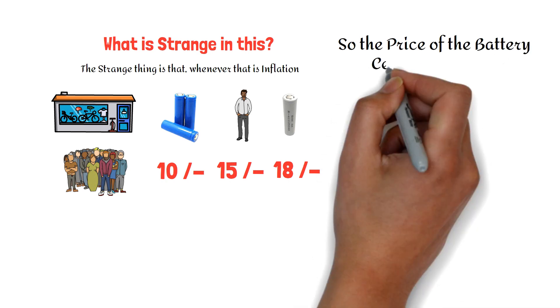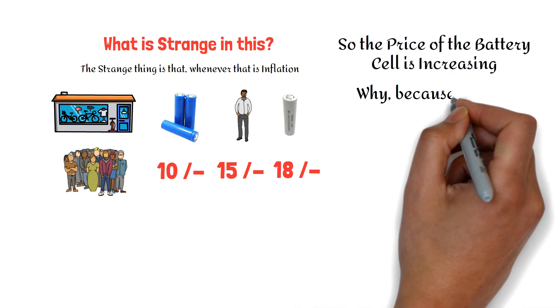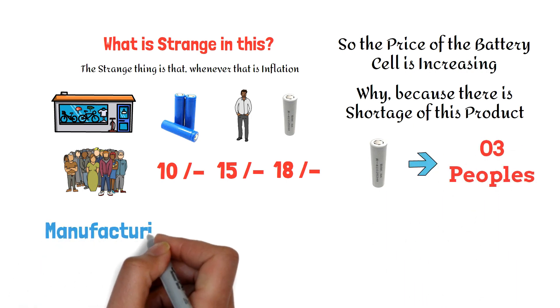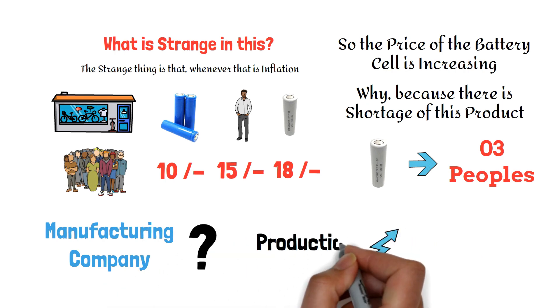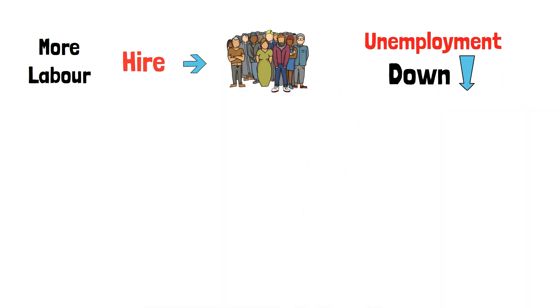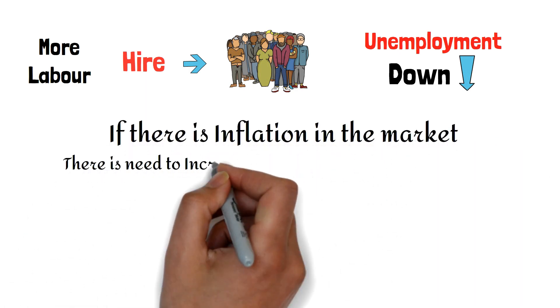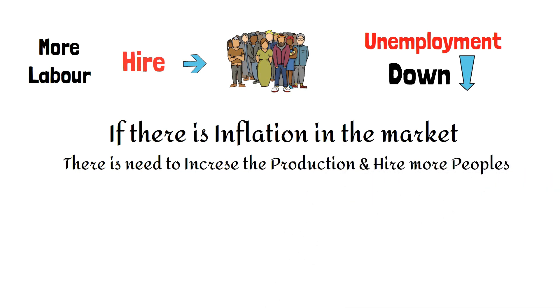So the price of the battery cell is increasing. Why? Because there is a shortage of this product. There is only one cell in the shop and three people are the buyers. So what should the manufacturing company do? It should increase the production of the battery cell. For increasing this production, the company will need more labor, so it will hire more people. So unemployment should go down, right? So if there is inflation in the market, there is a need to increase production and hire more people. So logically, unemployment should go down.